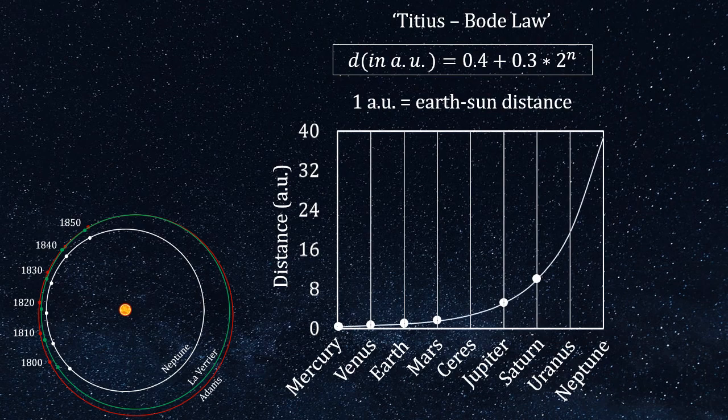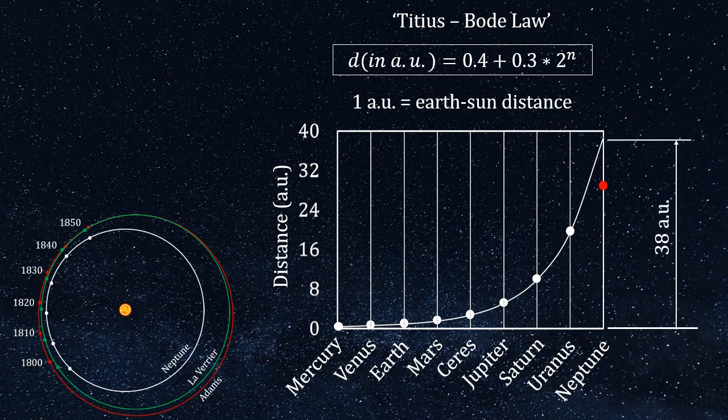However, the law turned into a mainstream tool for conducting research only when the planet Uranus and the asteroid belt object Ceres were found exactly at the locations predicted by the Titius-Bode law. But the law failed miserably for Neptune. The law predicted an orbital radius of 38 AU, whereas the true orbit of Neptune is much smaller, 30 AU.